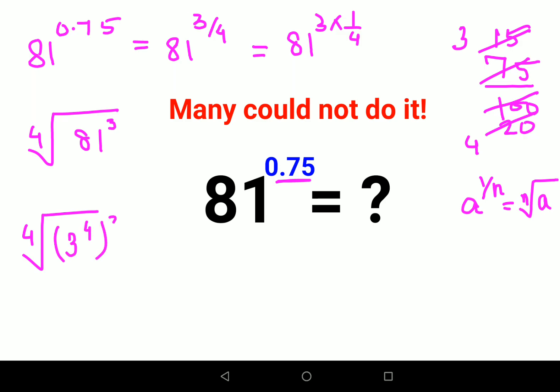In indices, when you have a raised to m and everything is still raised to another index which is n, you get it as a raised to m times n. So this is 3 raised to 12, and then we have fourth root of that.